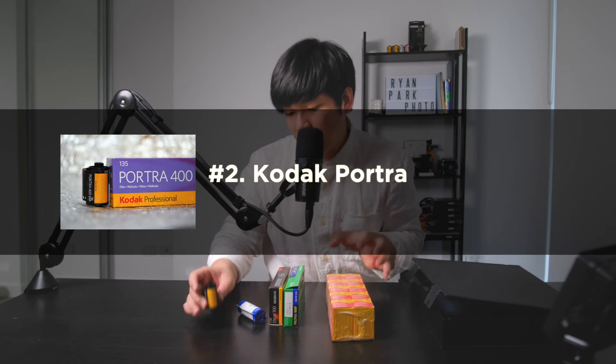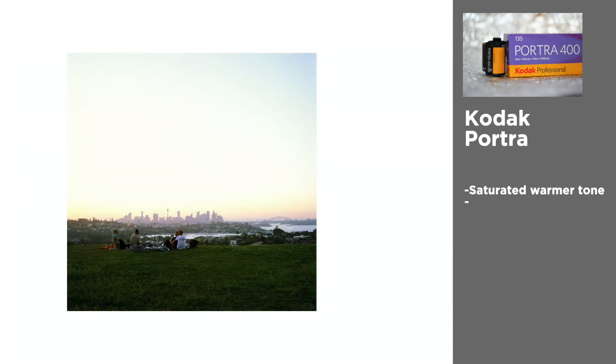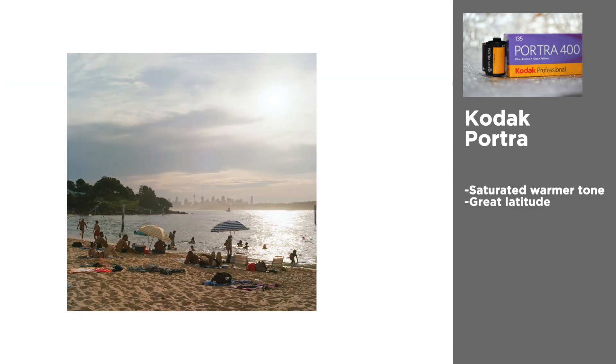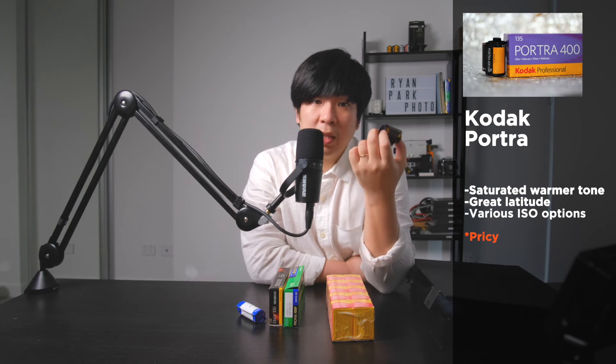It can be a bit boring as everyone recommends and talks about this film, but this is Kodak Portra 400. It comes in 400, 160, and 800, but this film is just beautiful. It has a saturated warmer tone. One of the other reasons I like this film is that it has amazing latitude, and when you overexpose, the results are beautiful. I use this film for all sorts of photography — daily, street, portrait, landscape, and travel. The only negative thing is the price. As it also comes in ISO 400 or 800, it gives me more flexibility based on the weather condition.